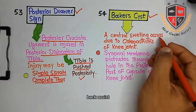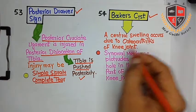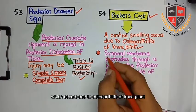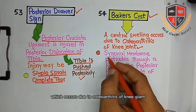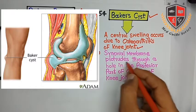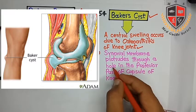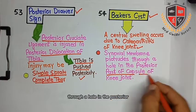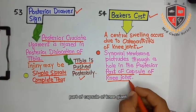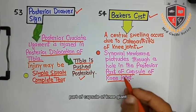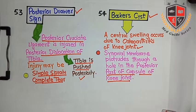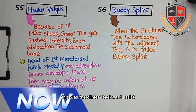The next clinical is Baker's cyst. It is a central swelling which occurs due to osteoarthritis of the knee. The synovial membrane protrudes through a hole in the posterior part of the capsule of the knee joint.